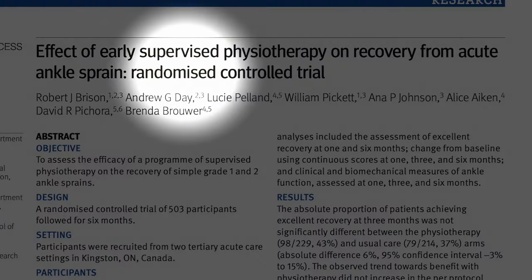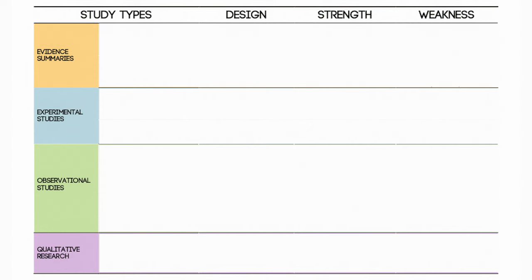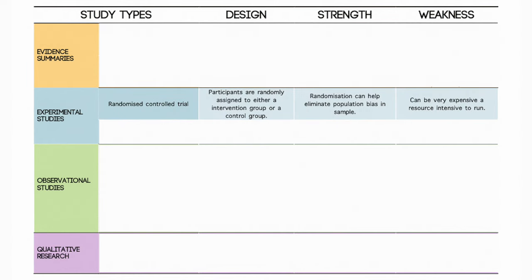The first key aspect you should take note of from the title is the design of the study. There are lots of ways to design a study to test a hypothesis. Randomised, double-blind, placebo-controlled trials are seen as the gold standard of biomedical research. In these kinds of trials, participants are randomly assigned to either an intervention group who receive the intervention, or a control group who receive a placebo, and neither they nor the researchers running the experiment know which participants belong to which group.